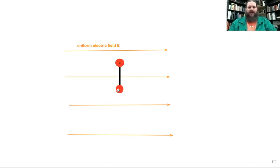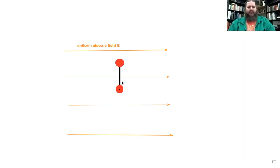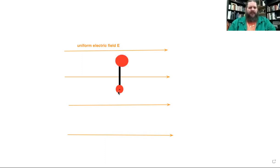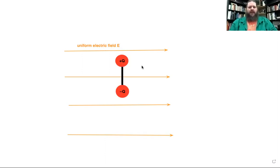So let's say this top end is positive and this bottom end is negative, and assume they're the same amount of charge — plus Q and minus Q. With the same amount of charge on each end, what's going to happen to these charged objects in the presence of this electric field?